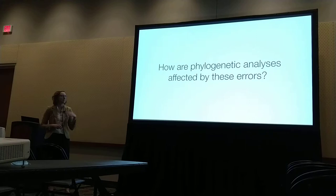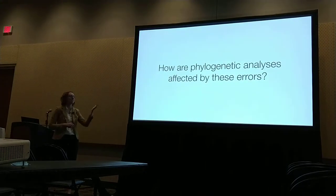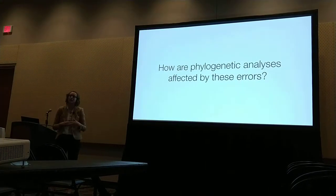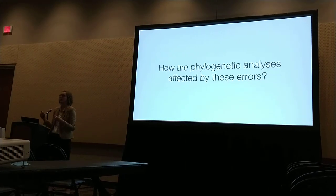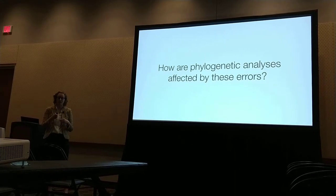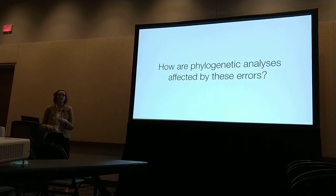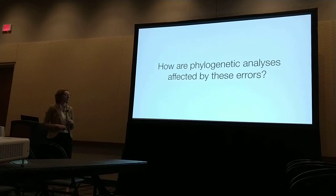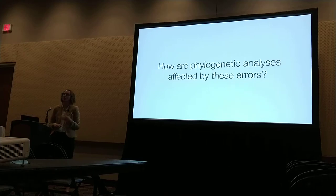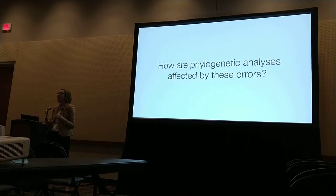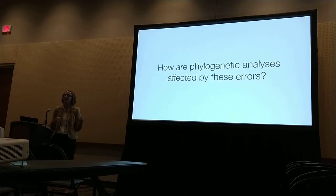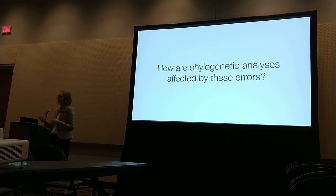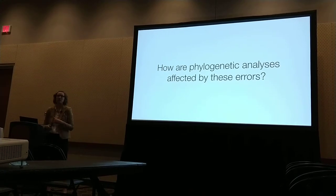What I'm really interested in is: given all of these things that can go wrong in terms of assembly, how are these errors potentially introducing bias into the phylogenetic inferences drawn downstream? In order to look at this, I'm going to take you through my pipeline, talk about the datasets I've made to look at these questions, and then show you some preliminary results.